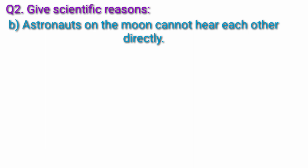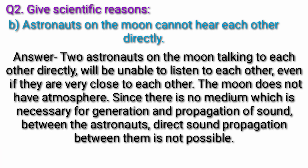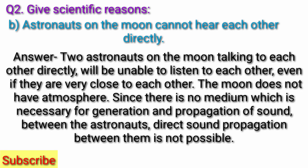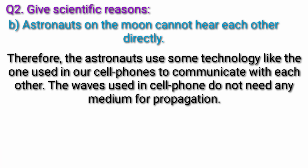Question B: Astronauts on the moon cannot hear each other directly. Answer: Two astronauts on the moon talking to each other directly will be unable to listen to each other even if they are very close to each other. The moon does not have an atmosphere. Since there is no medium, which is necessary for generation and propagation of sound between the astronauts, direct sound propagation between them is not possible. Therefore, the astronauts use some technology like the one used in our cell phones to communicate with each other. The waves used in cell phones do not need any medium for propagation.